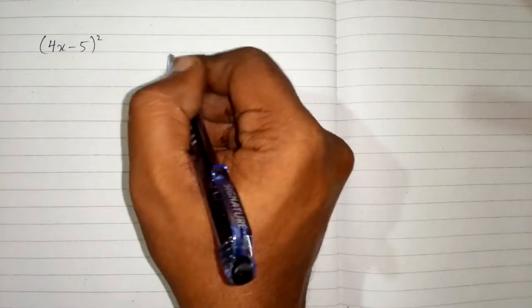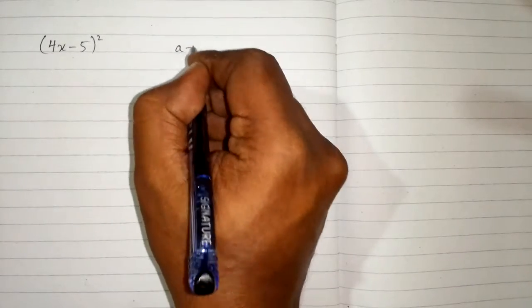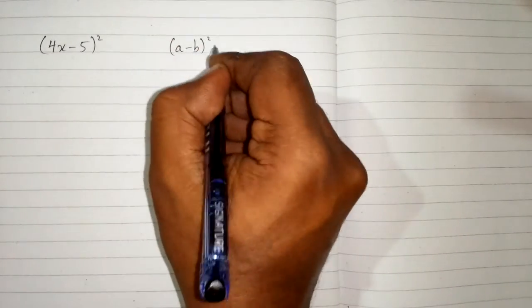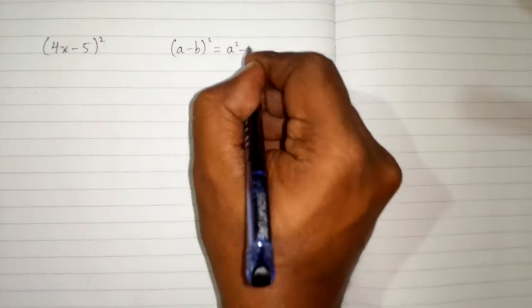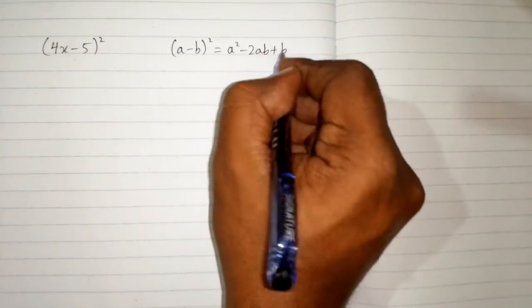In this video we will find the square of 4x minus 5. So we can use the formula a minus b whole square is equal to a square minus 2ab plus b square.